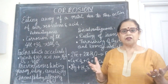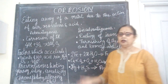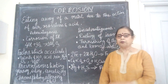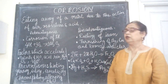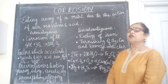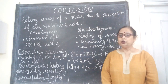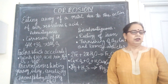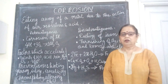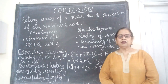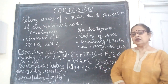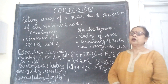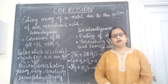So what actually is corrosion? Corrosion is the eating away of a metal due to the action of air, oxygen, or some acids. Eating away means there can be different effects of corrosion on different metals.